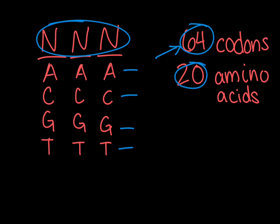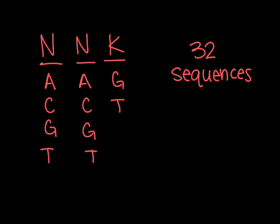However this gives us a higher probability of getting some amino acids over others so we might want to use a limited codon set. For example if we use NNK we can get A, C, G, or T for the first two positions but only G or T for the third position. This allows us to have less redundancy of the amino acids and reduces the number of stop codons that we can code for. Now our library size is limited to 32 sequences instead of 64.